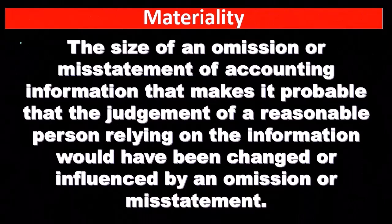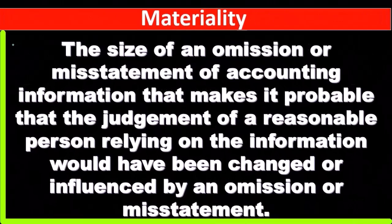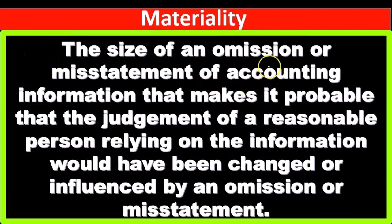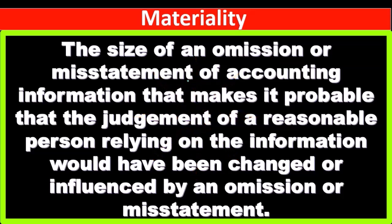Given that, let's go through this definition one more time. Materiality is the size of an omission or misstatement — either something was stated incorrectly or it wasn't stated and should have been — as well as a mistake of accounting information, that makes it probable. 'Probable' is not a specific term; it's a judgment term.